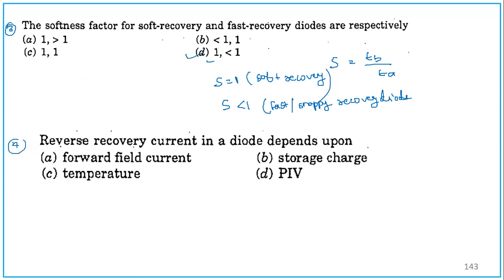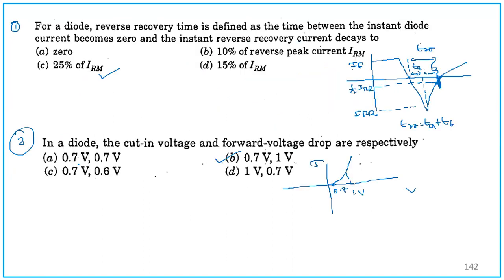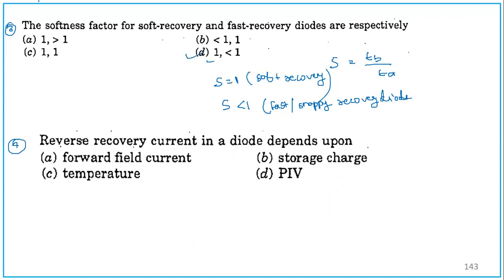Question number 4, reverse recovery current of a diode depends upon. We have just drawn the characteristic. Reverse recovery current is depending upon IF, that is actually the forward field current. Reverse recovery current is depending upon the forward field current. Option A.